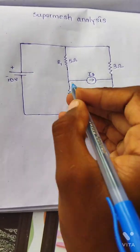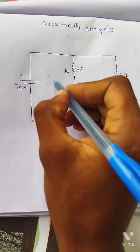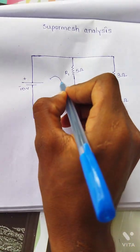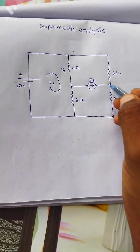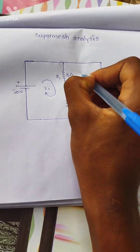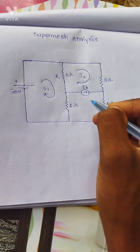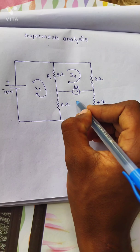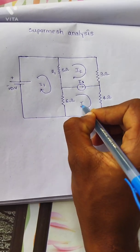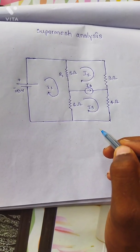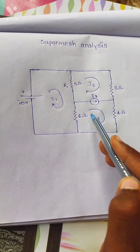We have three loops of current in this circuit. This is the first loop where I1 current flows. This is the second loop where I2 current is flowing. And this is the third loop where I3 current flows. So we have three loops in the circuit.